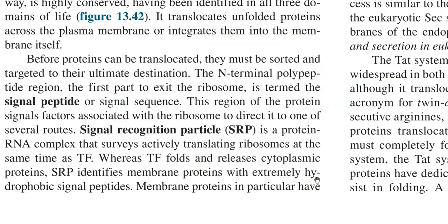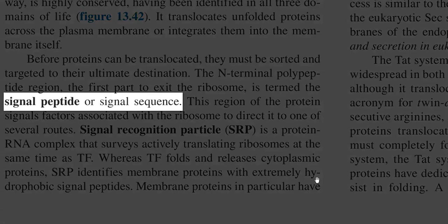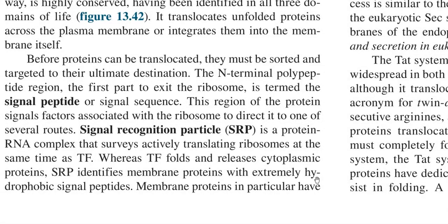The N-terminal of the polypeptide is the first to exit from the ribosome and is found to contain a signal peptide or signal sequence. This region of the protein can be easily recognized by the signal recognition particle — certain protein-RNA complexes present in the cell that constantly survey actively translating ribosomes to find the correct signal peptide sequence.